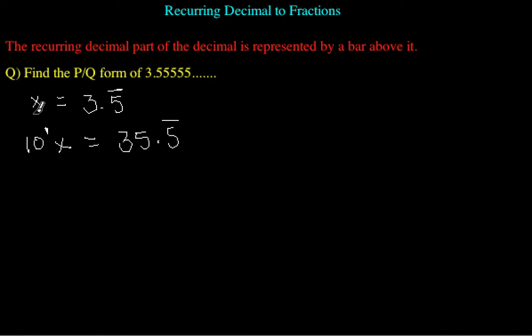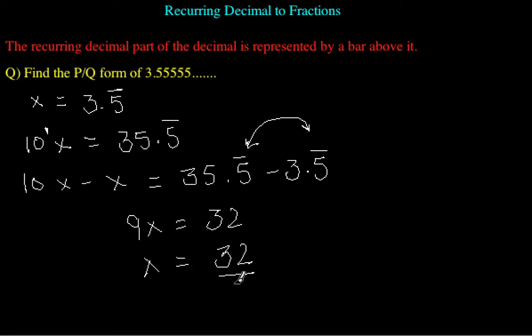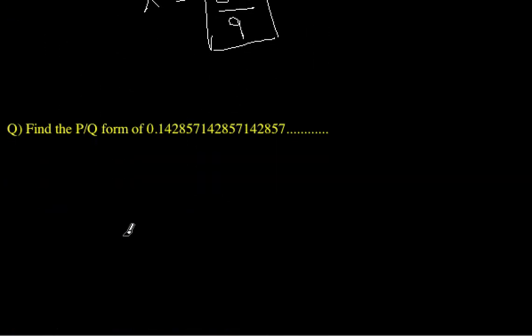If we subtract x from 10x, we have 10x minus x = 35.5 bar minus 3.5 bar. This way we are able to remove the recurring part: 35 minus 3 is 32, which equals 9x. So x is 32 upon 9, which is the required p upon q form. This is how we convert this simple recurring decimal into fraction form.